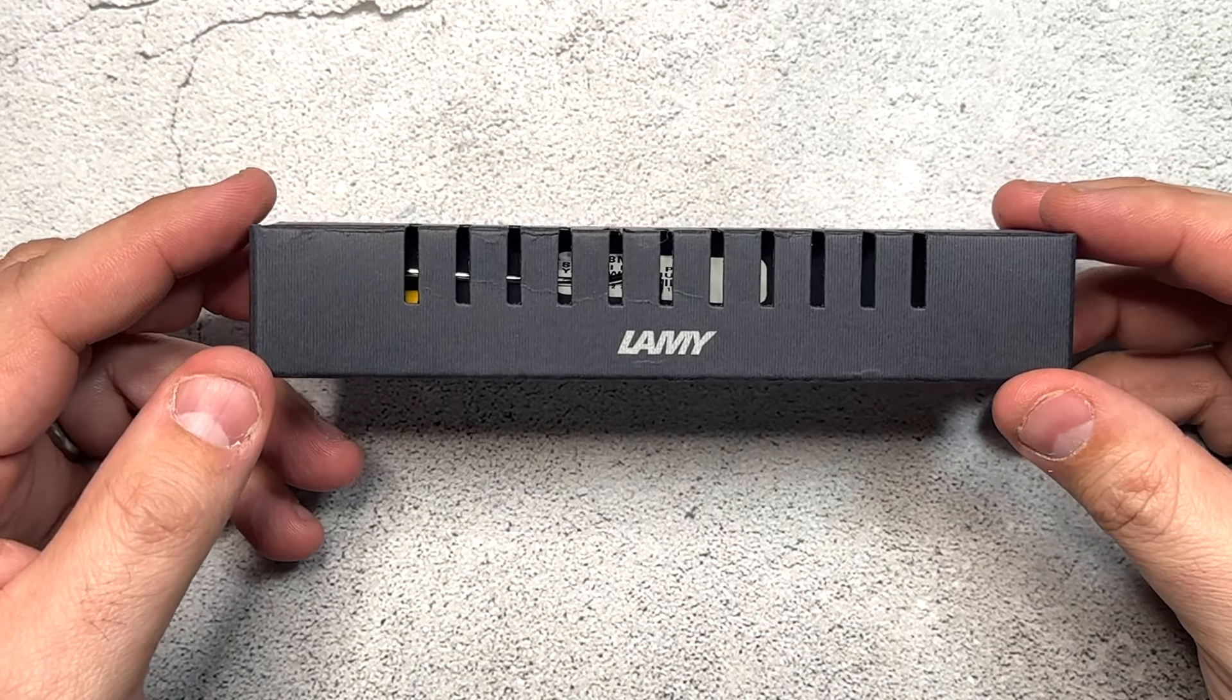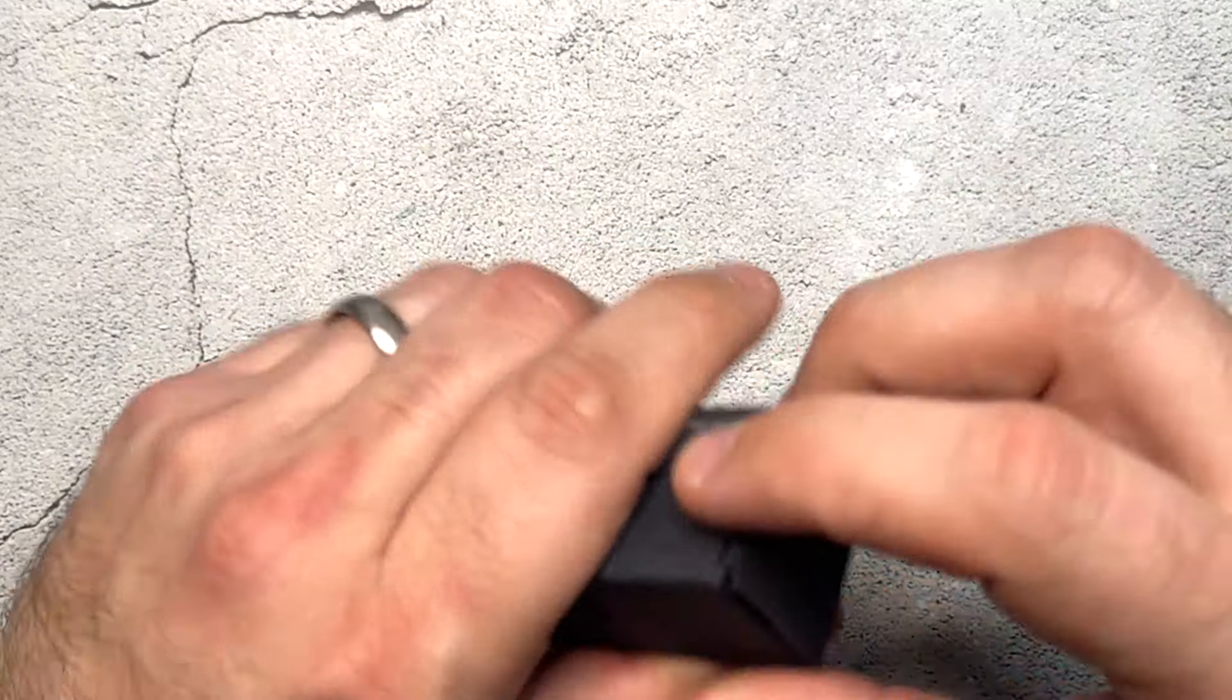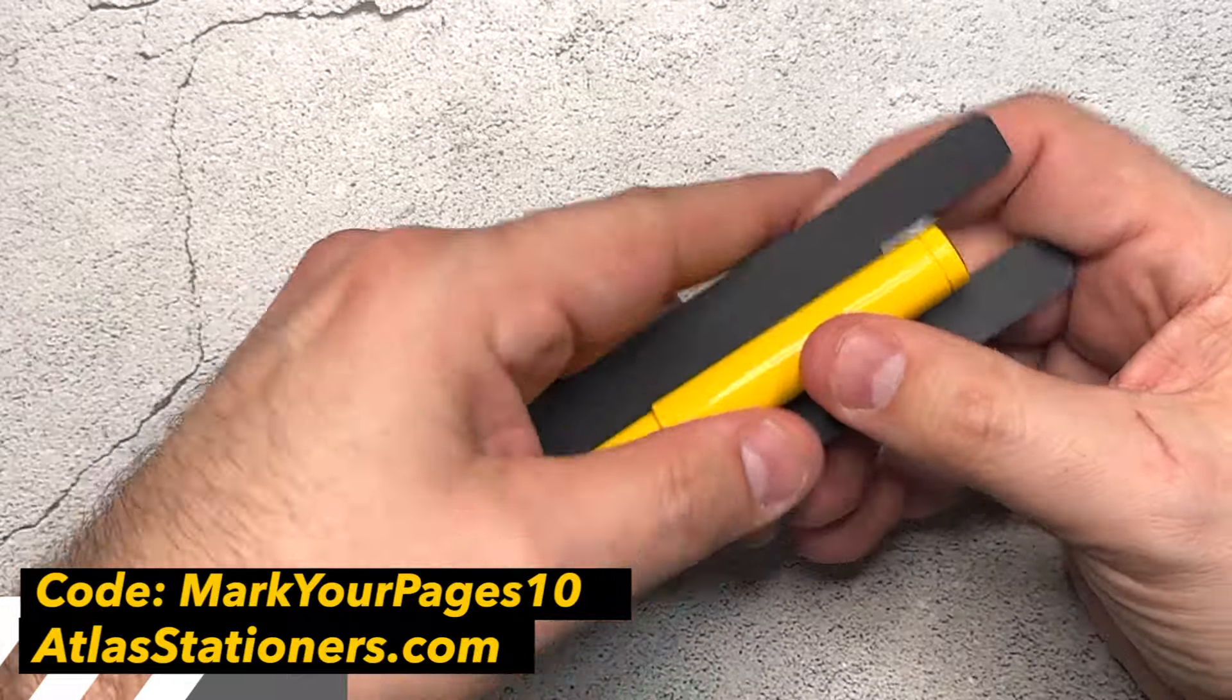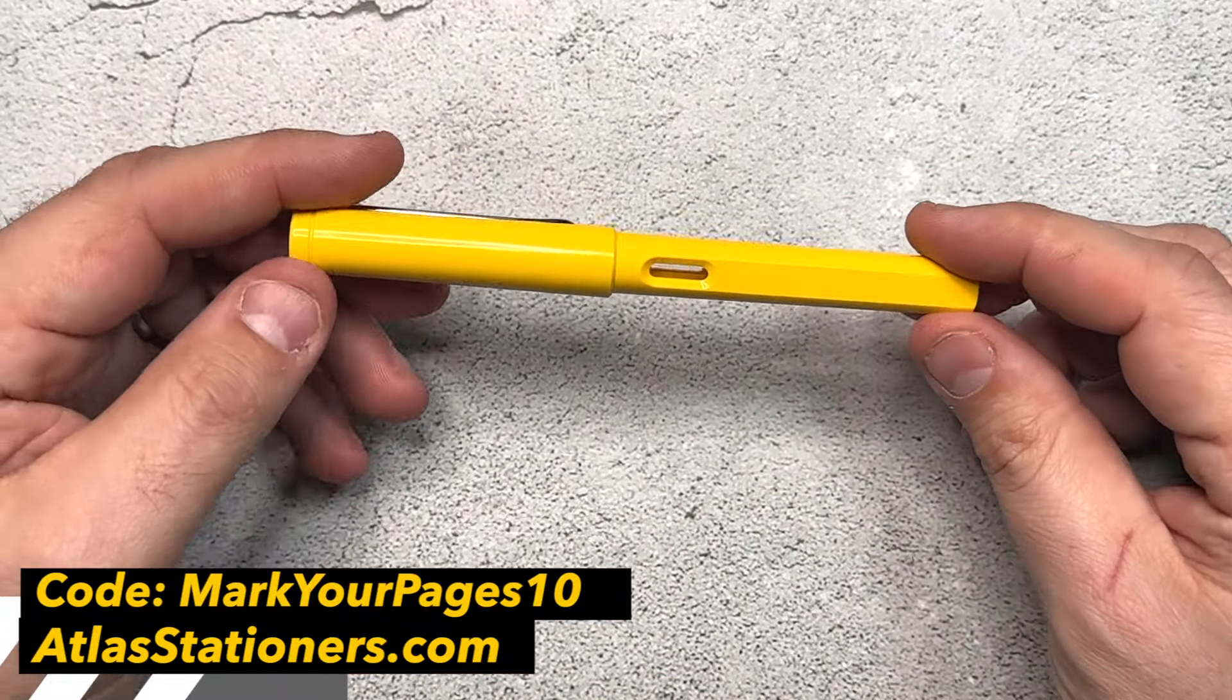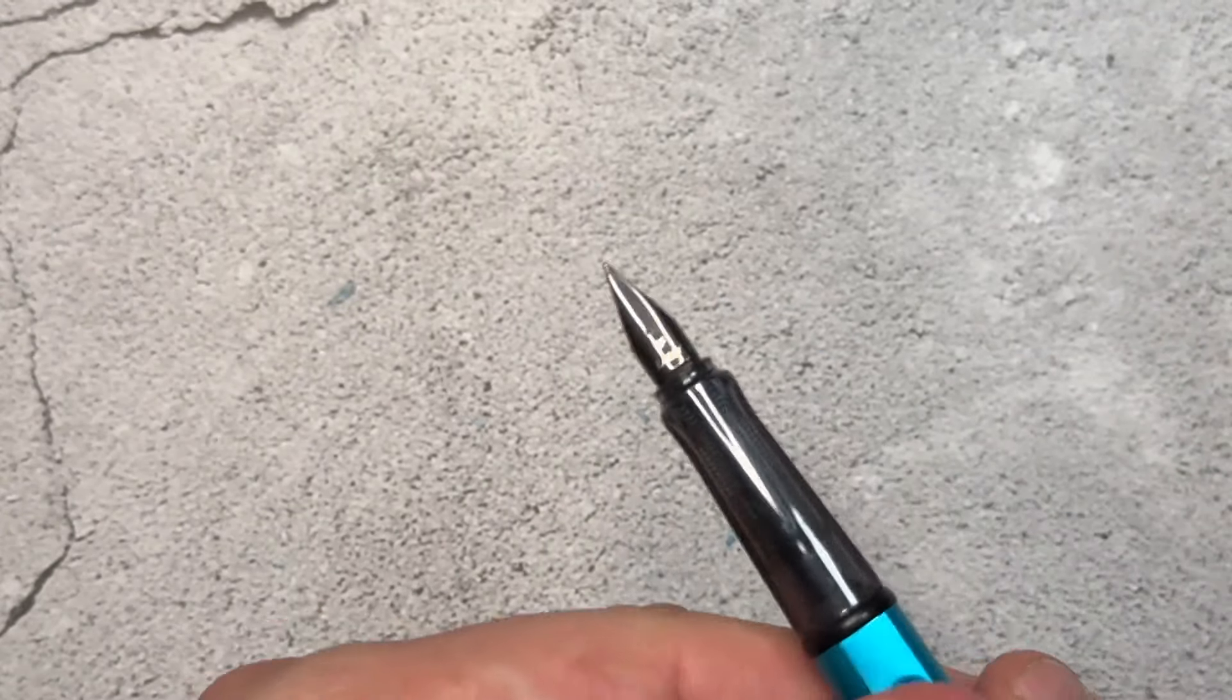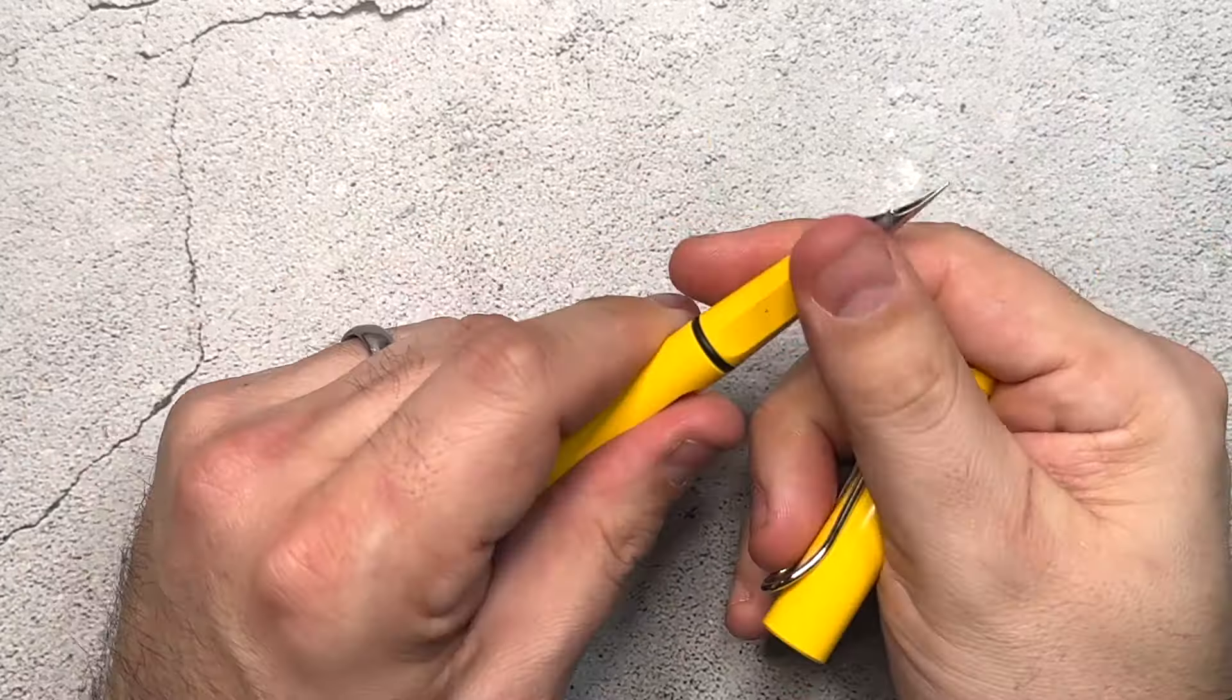So the first one here is going to be this Lamy. This is the Lamy Safari Fountain Pen. This one usually runs around $29-$30 depending where you're purchasing it from. This is one of the items though that you can use my discount code over on Atlas. Save you a few extra bucks. So this one is just yellow. I couldn't help it. I saw this one and I was like I don't have anything like it. I have my blue one which was my very first fountain pen that I've ever had. So when I saw the yellow I just said Mark get it because it's super nice.